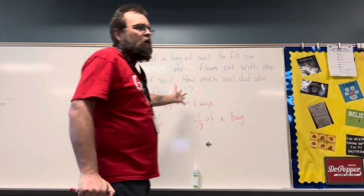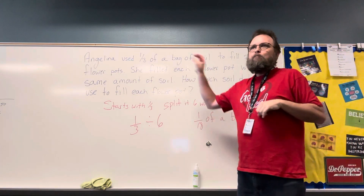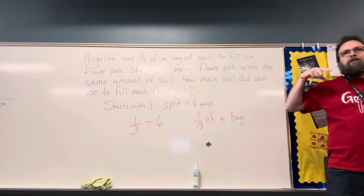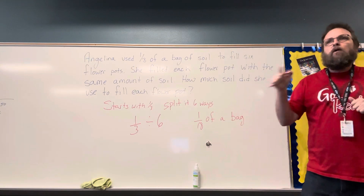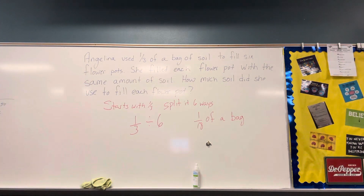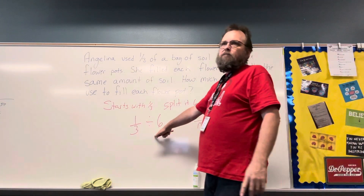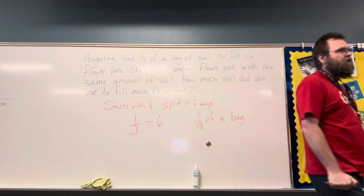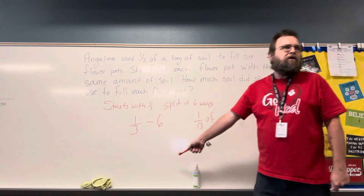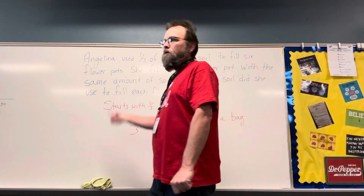The first thing we did was decide what we're splitting up — the bag of soil or the flower pots. That's important because if this were multiple choice, I guarantee you 18 would be an answer. You need to identify what you're splitting up first and then write the equation. When doing division with unit fractions and whole numbers, if you start with a unit fraction, your answer is always a unit fraction. If you start with a whole number, your answer is always a whole number.